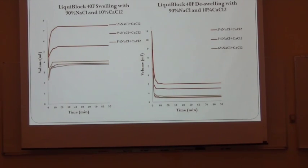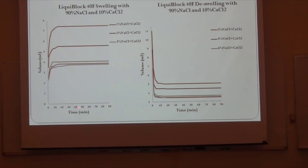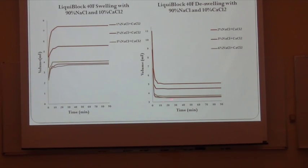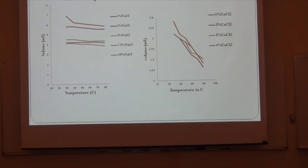This is the calcium and sodium chloride brine mixture. As I said, in the real world you find around 90–92% sodium chloride and around 10% calcium chloride in brine. So I chose 90% sodium chloride and 10% calcium chloride. Based on that, the results are pretty much similar to the sodium chloride graph. When you increase the sodium chloride percentage, the swelling goes down. And when you increase the sodium and calcium chloride percentage, the de-swelling goes back toward the normal size of the polymer — around 3.2 milliliters. If you increase more, it would go back to zero.